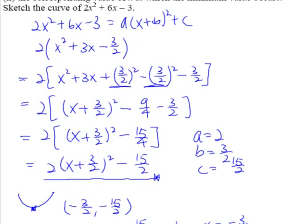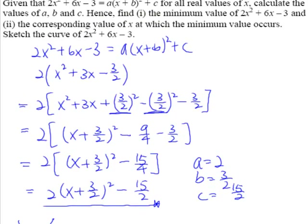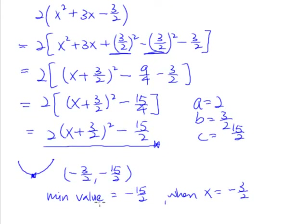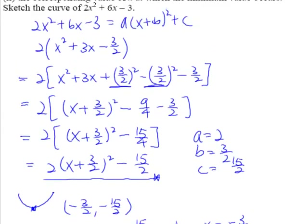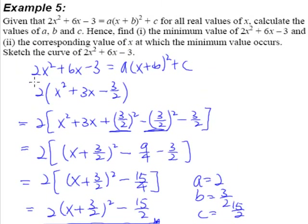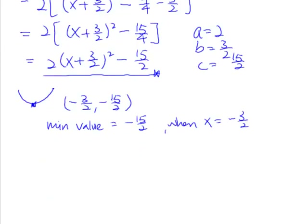Let's take a look at the question one more time. Find the minimum value of the quadratic equation and the corresponding x value. The minimum value is negative 15 over 2, occurring when x is negative 3 over 2. Now the last part of this question asks us to sketch the curve. How do we do that? Well, the first thing we need is to draw the x and y axes.